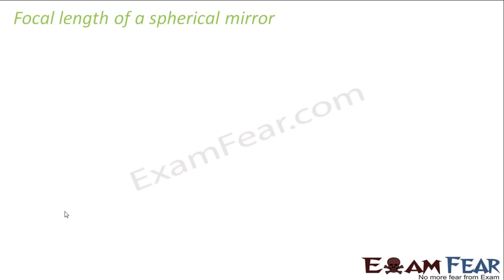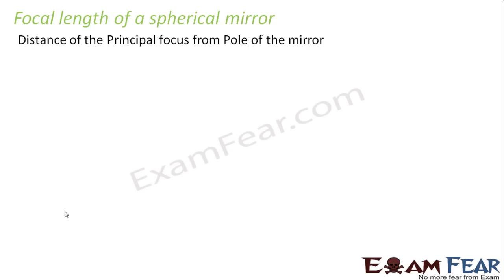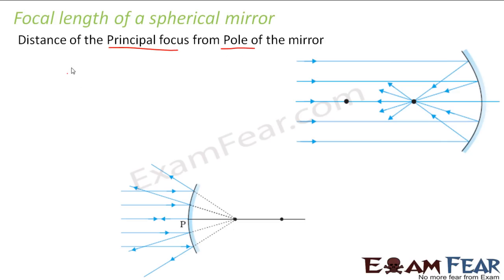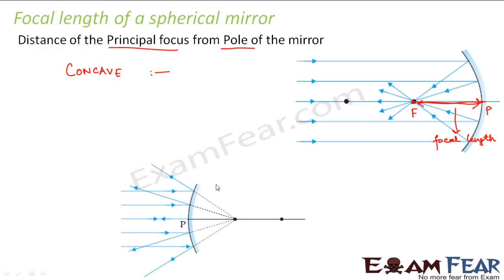So what is the focal length of a spherical mirror? Focal length is nothing but the distance of the principal focus from the pole of the mirror. For example, in the case of a concave mirror, the principal focus is at a certain point, and the pole is at another point. The distance between the focus and the pole is the focal length.